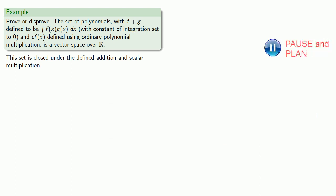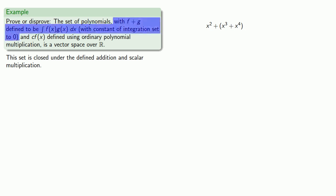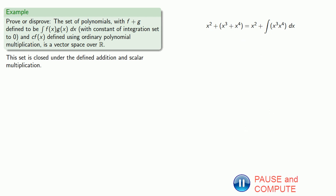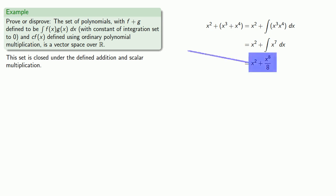Next, let's check associativity. An example is not a proof, but it can give insight. Let's compute x² ⊕ (x³ ⊕ x⁴). First, x³ ⊕ x⁴ is the antiderivative of x³ · x⁴ = x⁷, which gives x⁸/8. Then x² ⊕ (x⁸/8) is the antiderivative of x² · x⁸/8 = x¹⁰/8, which gives x¹¹/88.